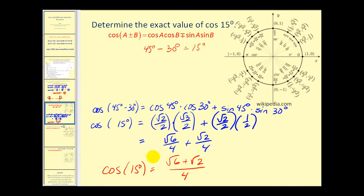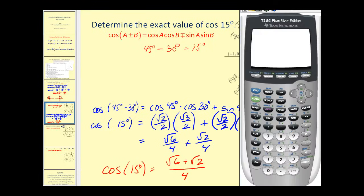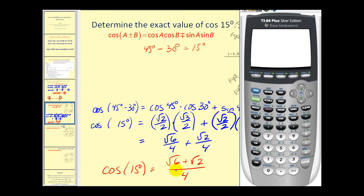We can check this on our graphing calculators in decimal form. First make sure we're in degree mode, press enter, go back to the home screen, and type in cosine 15 degrees. Then we compare this to the exact value we found, and this verifies our work.